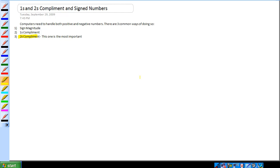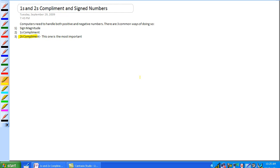Okay, good day. This is Jim Pytel from Columbia Gorge Community College's Renewable Energy Technology Program. This is EUT 121, digital one. Today we're going to discuss ones and twos complement and signed numbers. Computers need to be able to handle positive and negative numbers. There's three common ways of doing so: sign magnitude, ones complement, and twos complement. That's the one that's most important and that's the one we spend the most time on.